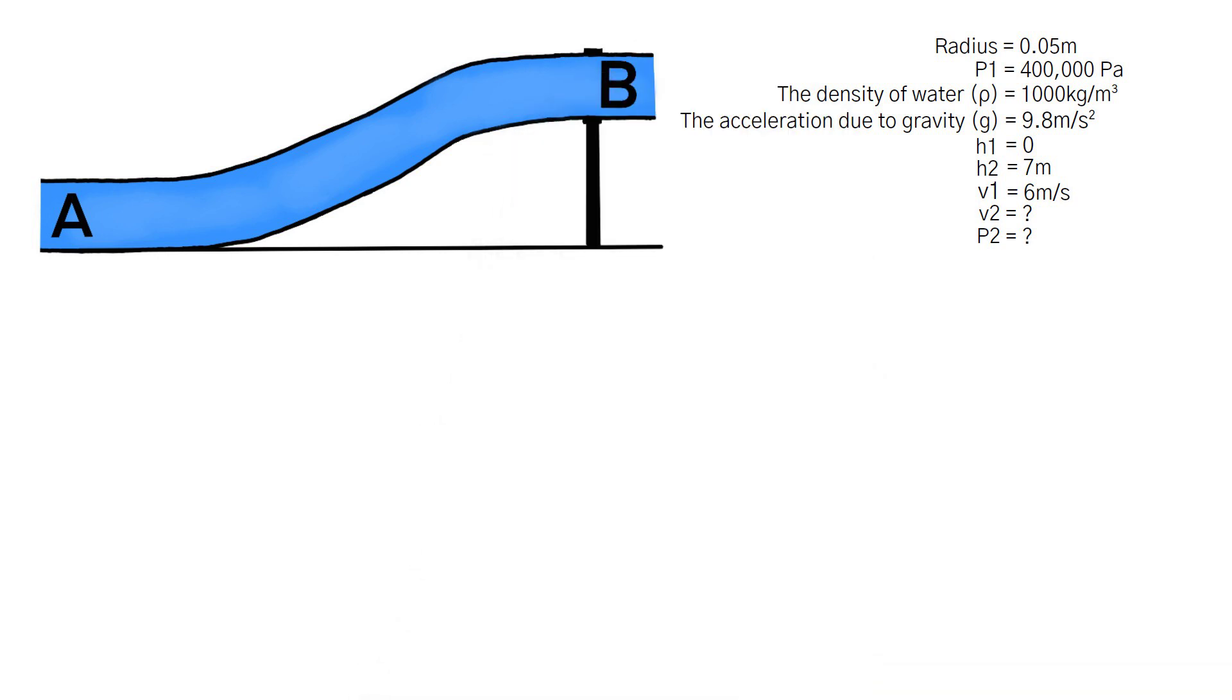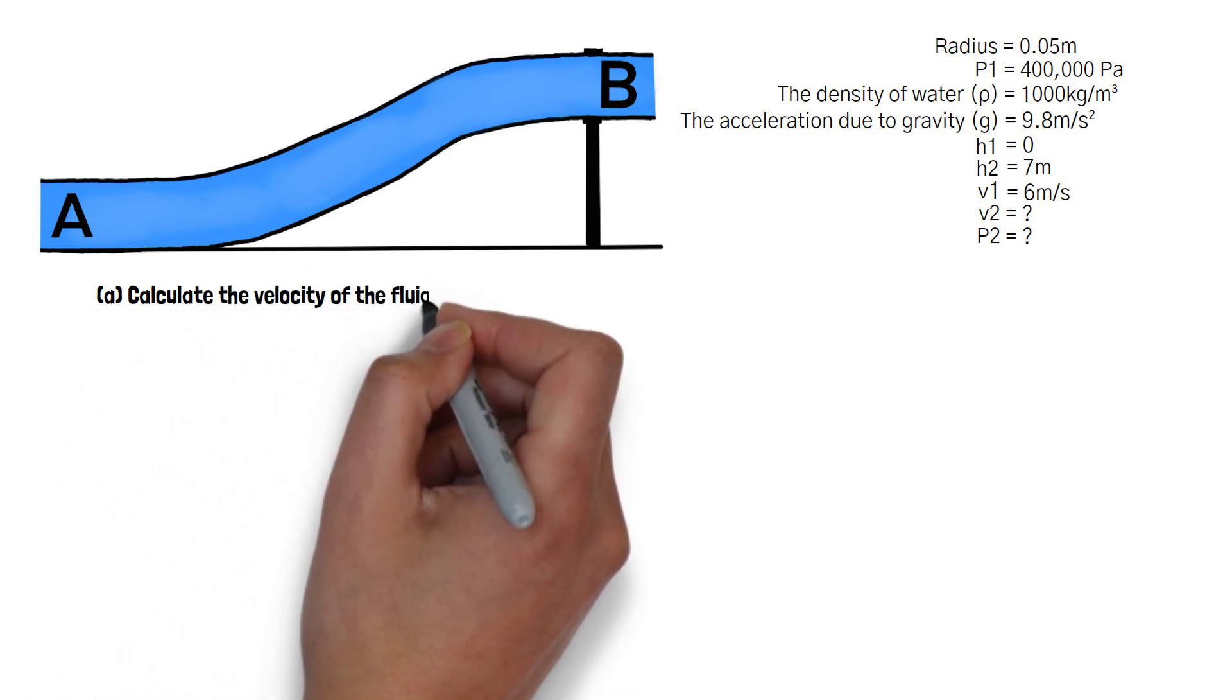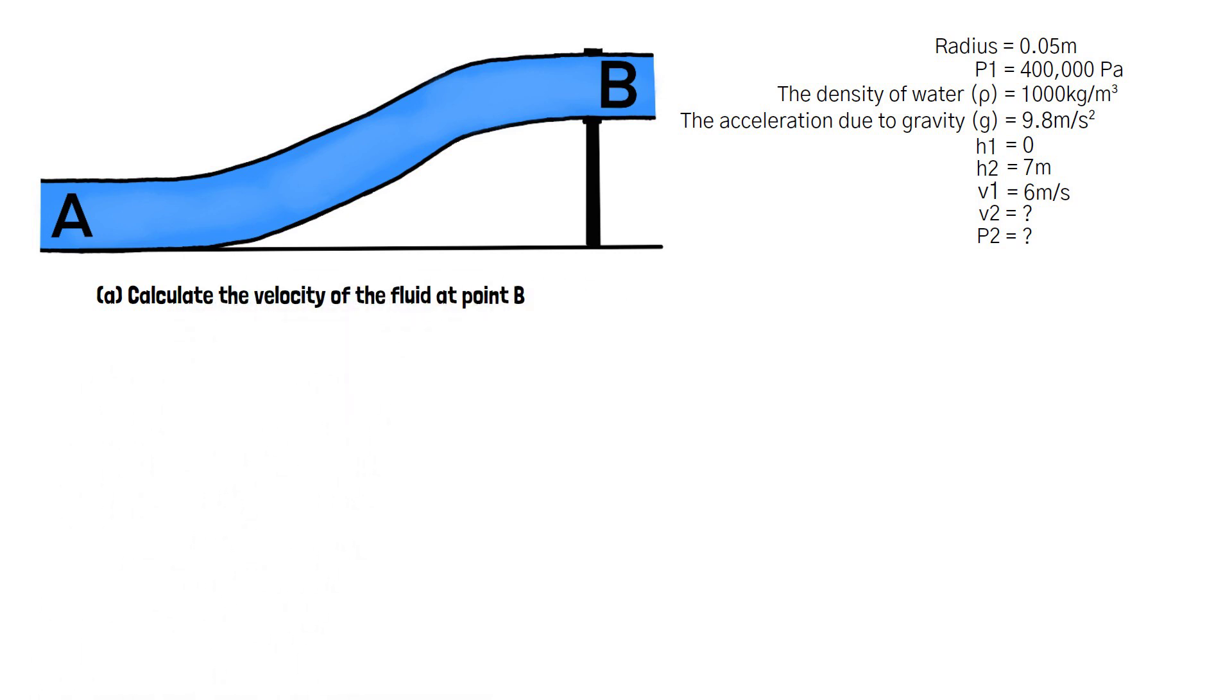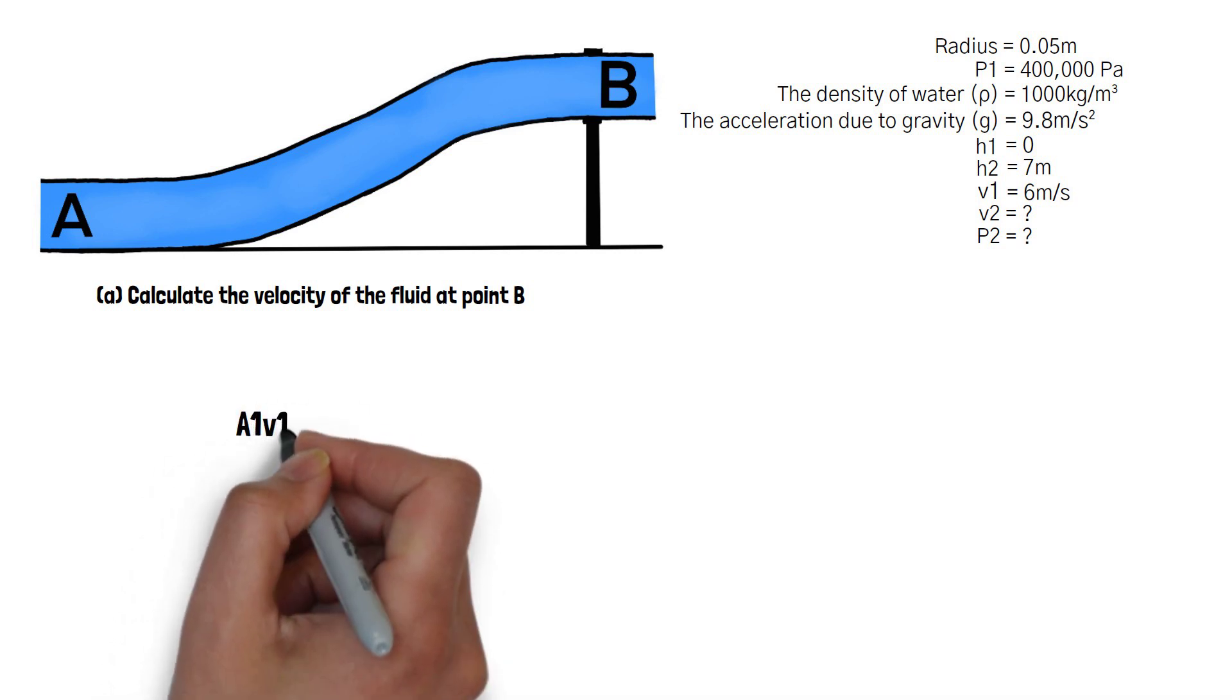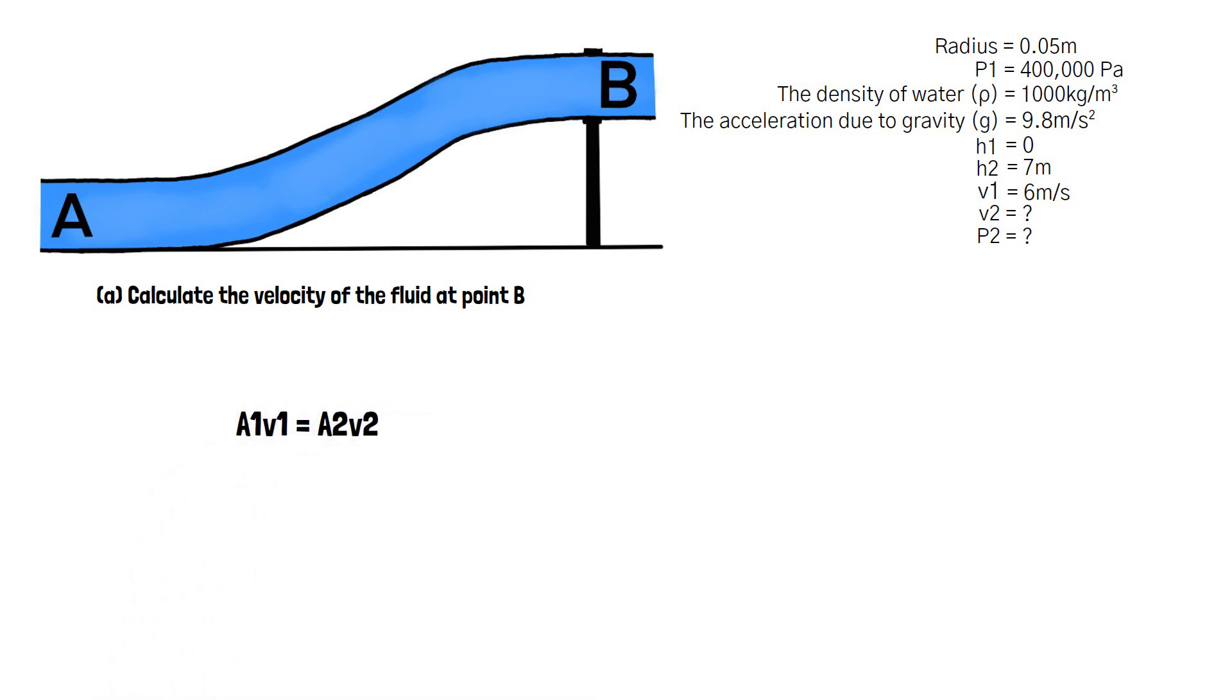Sub question A requires us to calculate the velocity of the fluid at point B. We can do this by using the continuity equation A1V1 equals A2V2. The continuity equation shows us that the area and velocity are proportional to each other, and if there is an increase in one there must be a decrease in the other and vice versa.